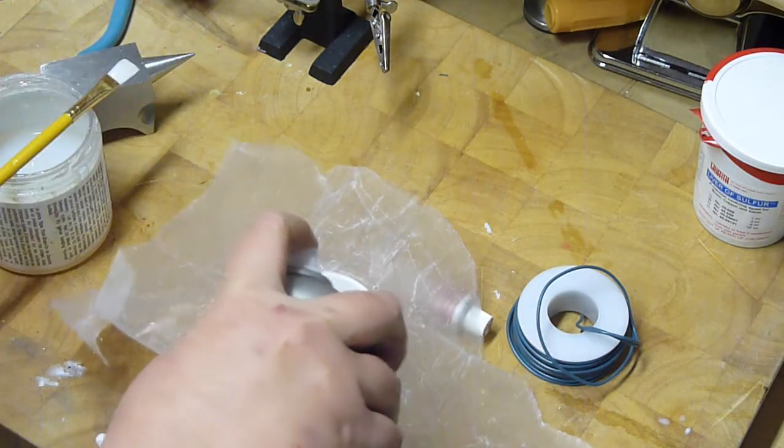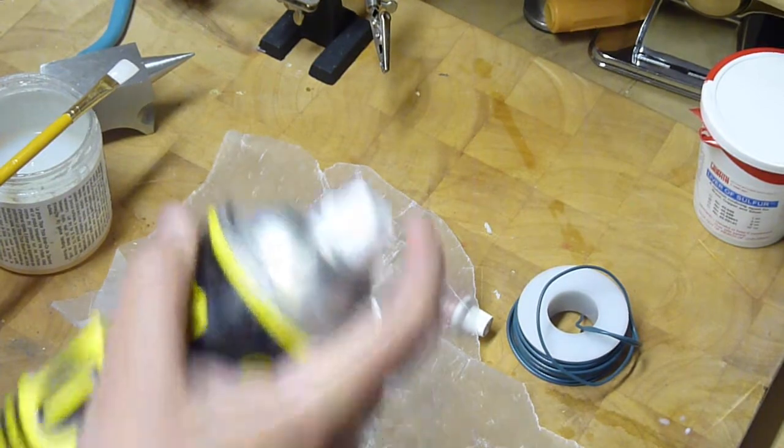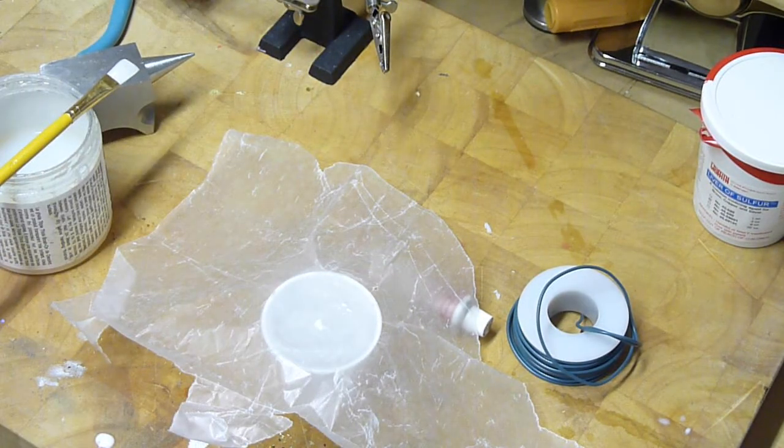But any kind of mold release will work. Like I said, you can use a cooking spray and you just spray it on the wax paper first.